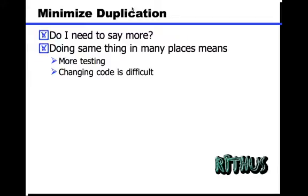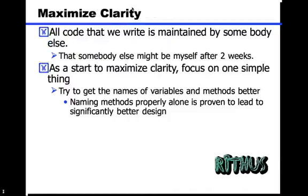The next most important thing is minimize duplication. Having the same thing done in multiple places means multiple changes, probably multiple testings, and bugs.